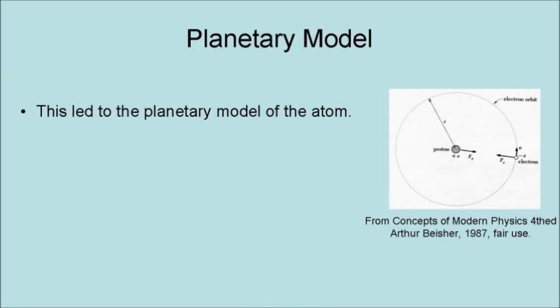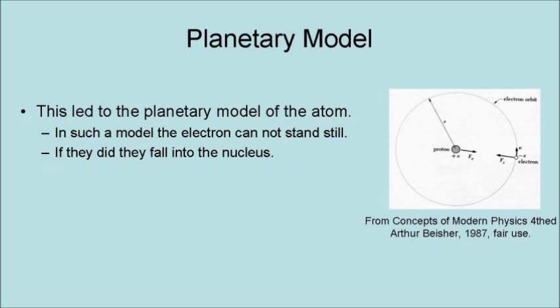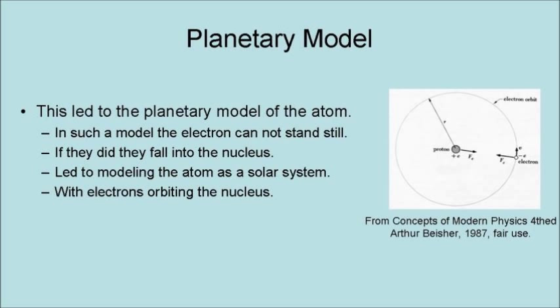This led to the planetary model of the atom. In such a model, the electrons cannot stand still, because if they did, they would fall into the nucleus. This led to modeling the atom as a solar system, with electrons orbiting the nucleus like planets around a star.